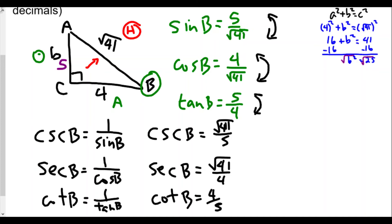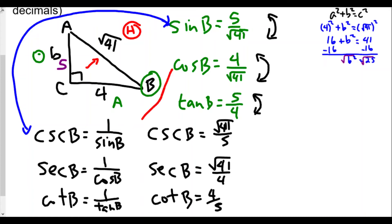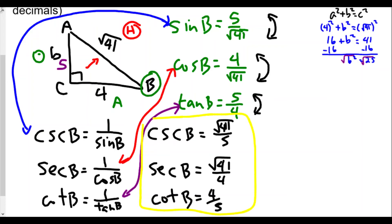We flip tangent too. So to summarize the relationships: sine of B is related to cosecant of B as reciprocals; cosine of B is the reciprocal of secant of B; and tan of B is the reciprocal of cotangent of B. Just take sine, cosine, and tangent and take their reciprocals to get your final answers — those ratios right there.